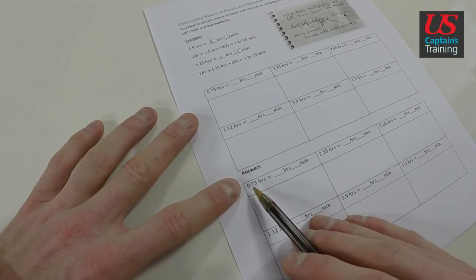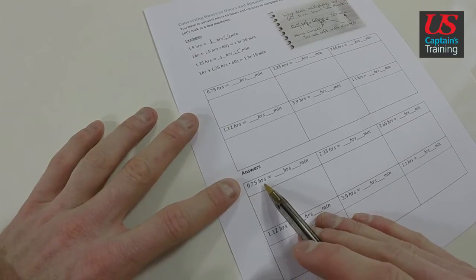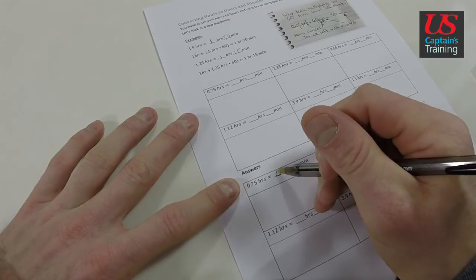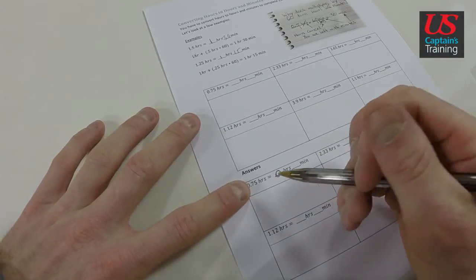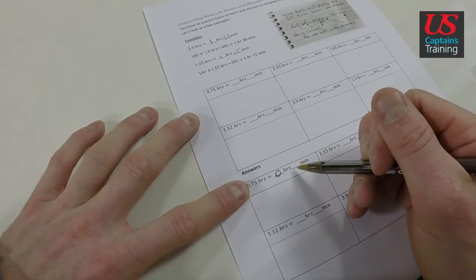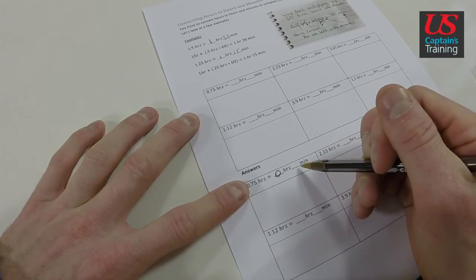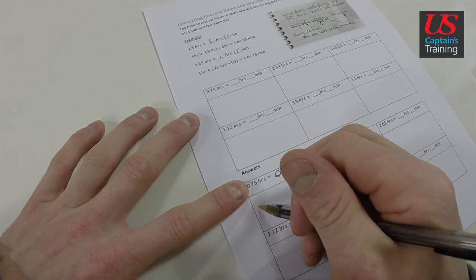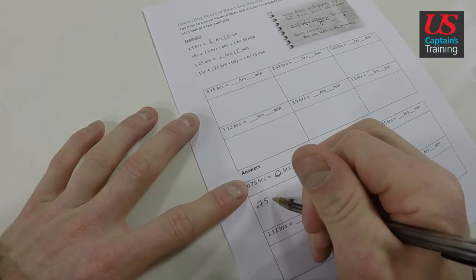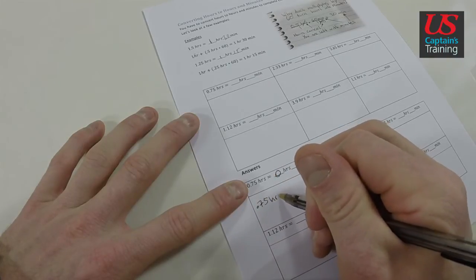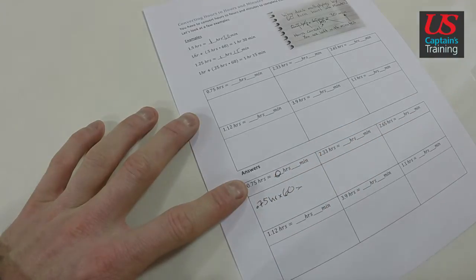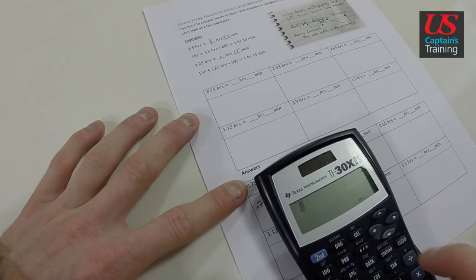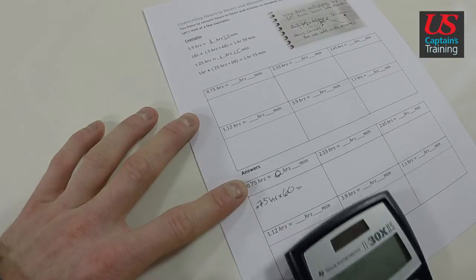Let's look at 0.75 hours. We know this is zero full hours. And now 0.75 hours equals how many minutes? Well, we know it to be 45 just from our mental math, but let's do it. 0.75 hours times 60 equals - get out our calculator - 0.75 times 60 equals 45 minutes.